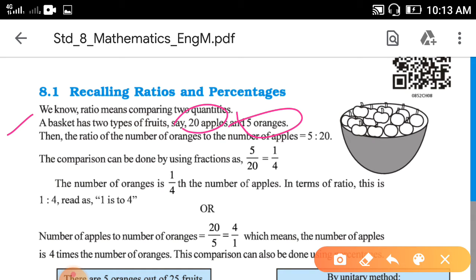There are 20 apples and 5 oranges. So how can you compare this quantity of apples and oranges? The ratio of the number of oranges to the number of apples is 5 to 20.